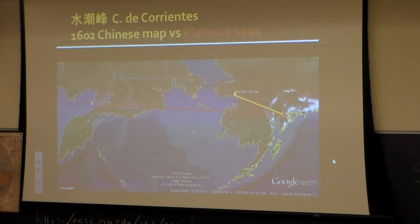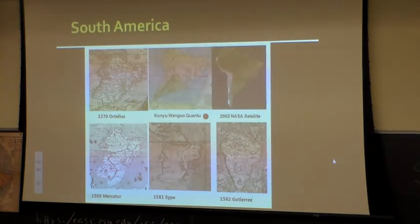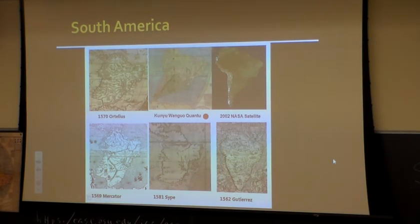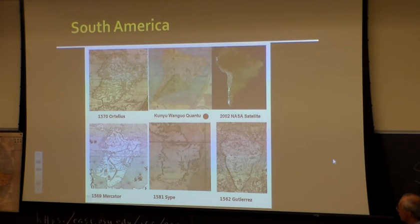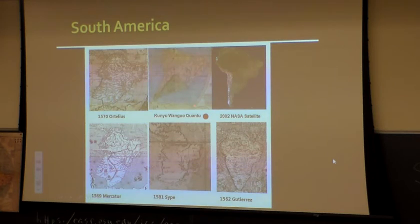I'll just show one slide on South America. The Chinese map is the closest one to the NASA satellite picture. And look at the other European maps of the same period — 1570, 1569, 1581, 1562 — they're all so primitive compared to the Chinese world map.